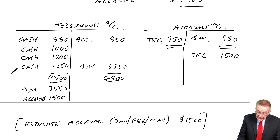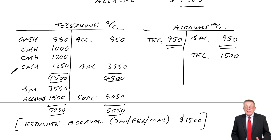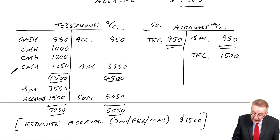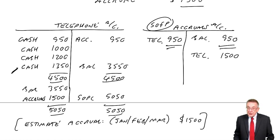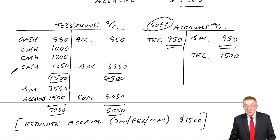And that one entry makes it all perfect. Because telephone, the total expense is now £5,050. And as always, that goes to the statement of profit or loss. Credit telephone, debit statement of profit or loss. And the telephone account balance is zero, ready for next year. The accruals account, there's our liability at the end of this year. And that will appear in the statement of financial position. And as always, we leave the balance there. It's still there at the beginning of next year.